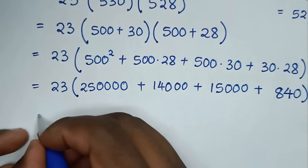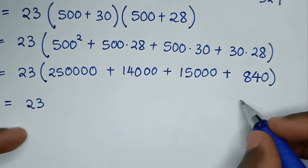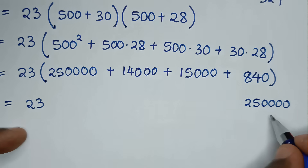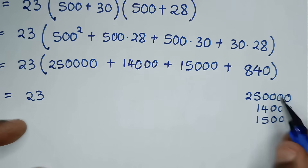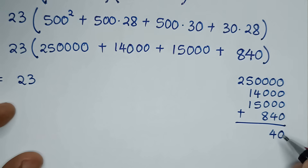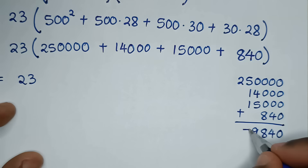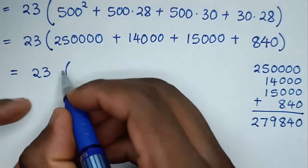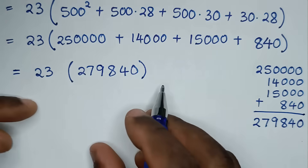So into here it will be equal to 23. Let's add this all together: 250,000 plus 14,000 plus 15,000 plus 840. The sum gives us 279,840, bracket.